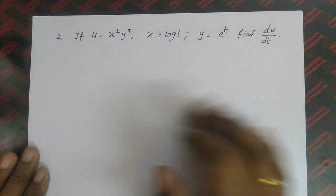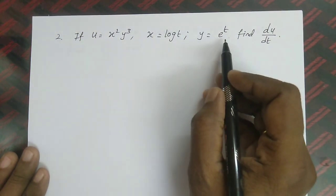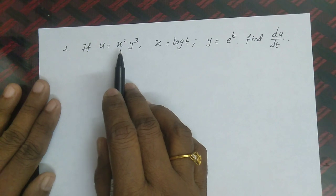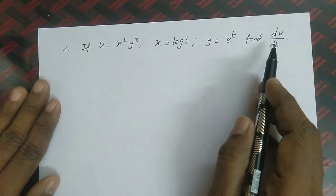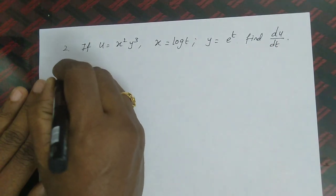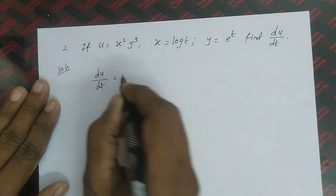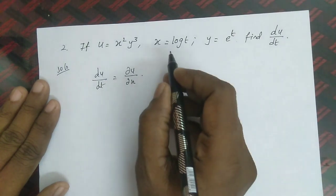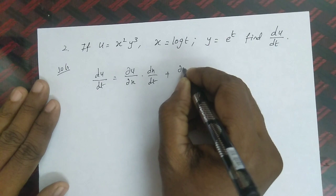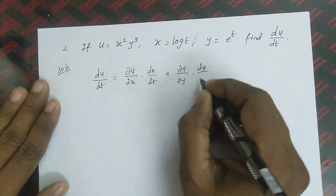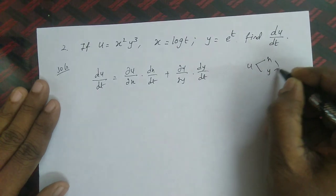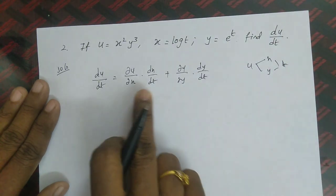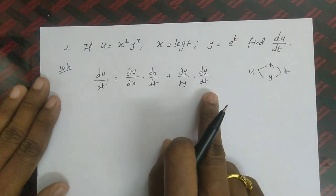If u = x²y³, x = log t, and y = eᵗ, find du/dt. This is similar to the previous result: u is a function of x and y, and x and y are functions of t. So du/dt = (∂u/∂x)(dx/dt) + (∂u/∂y)(dy/dt).